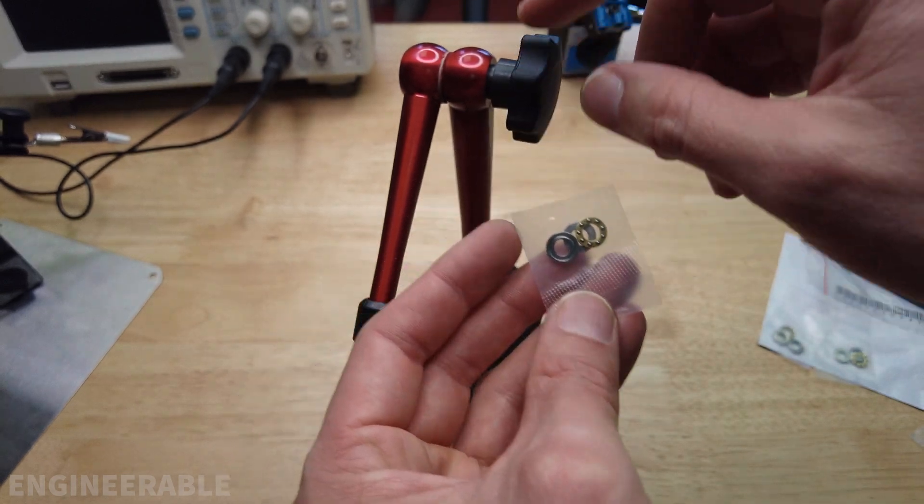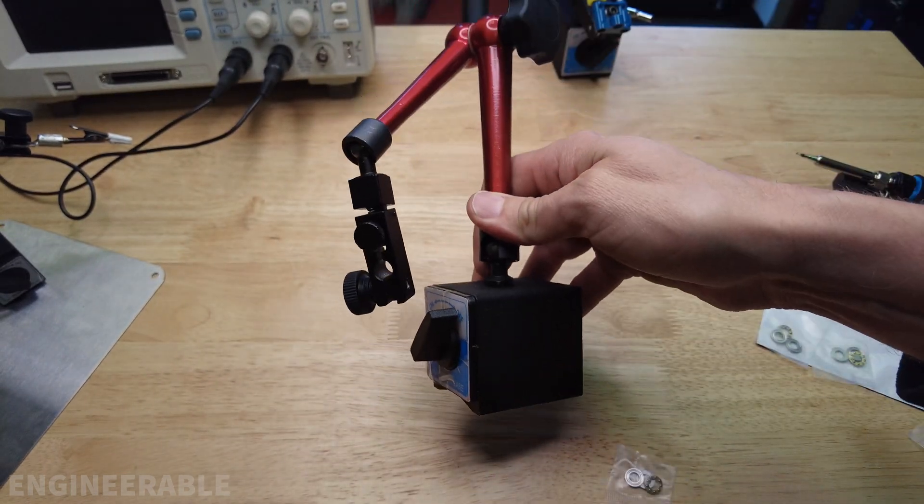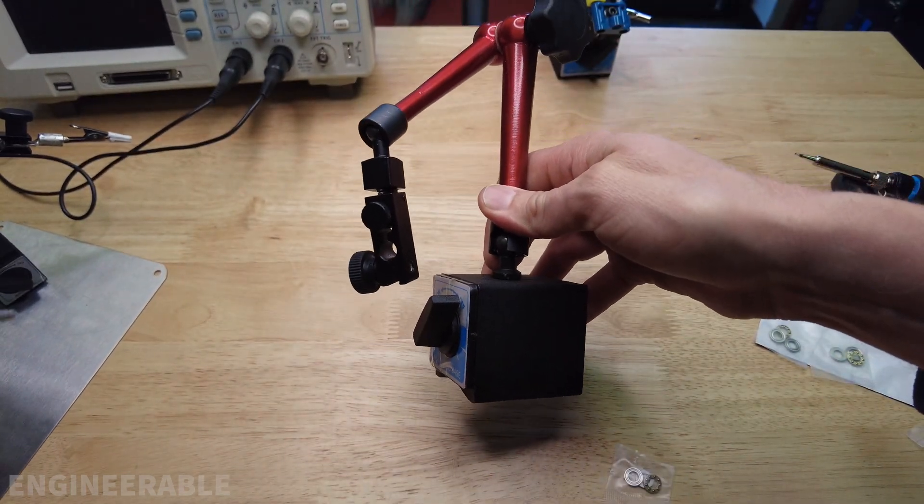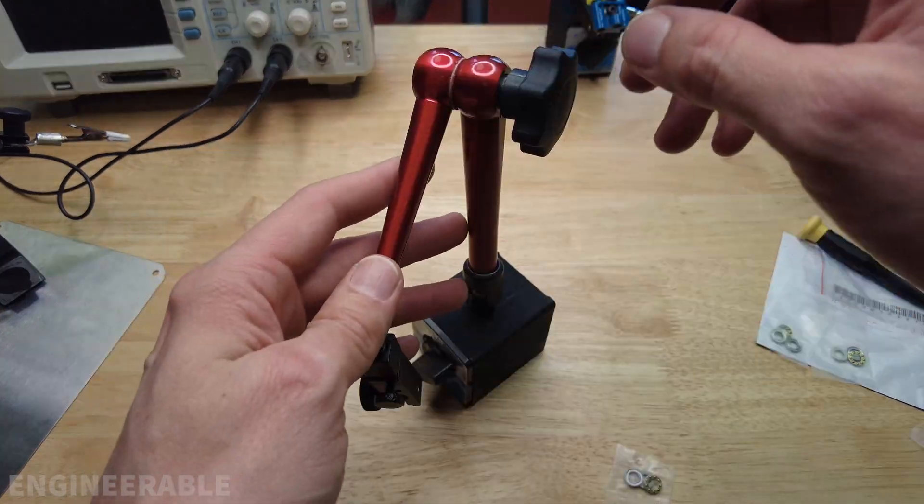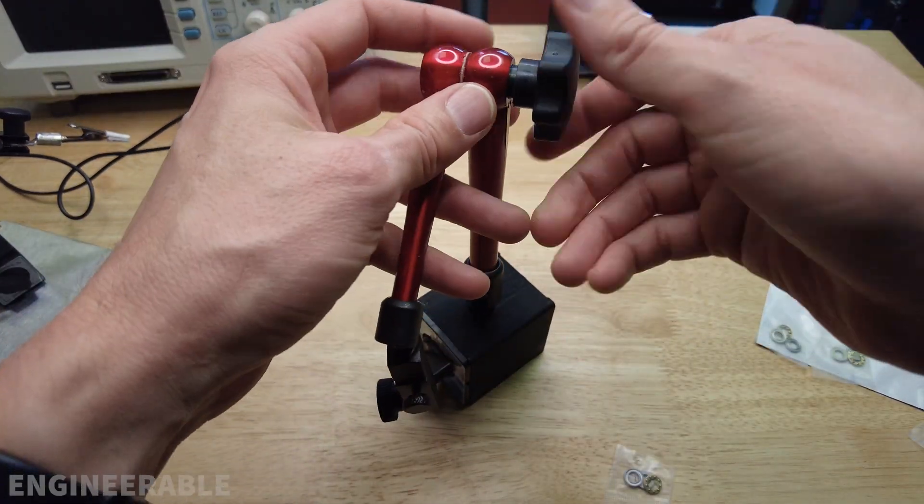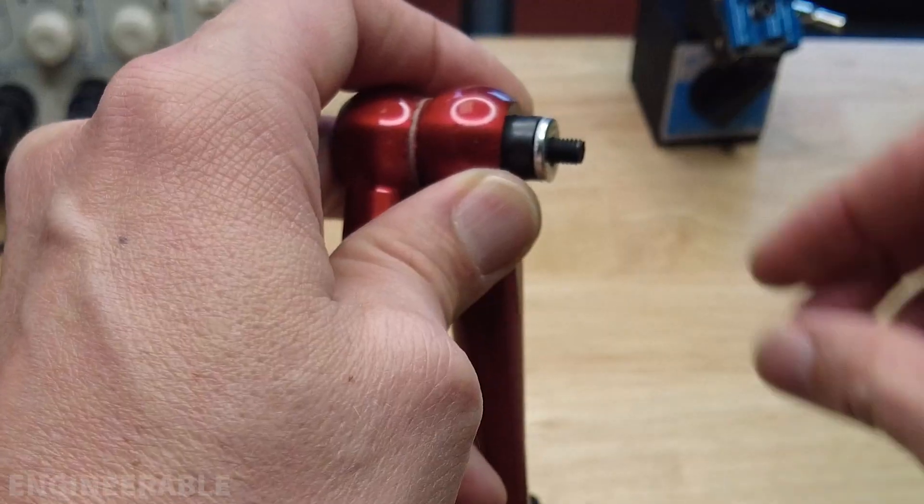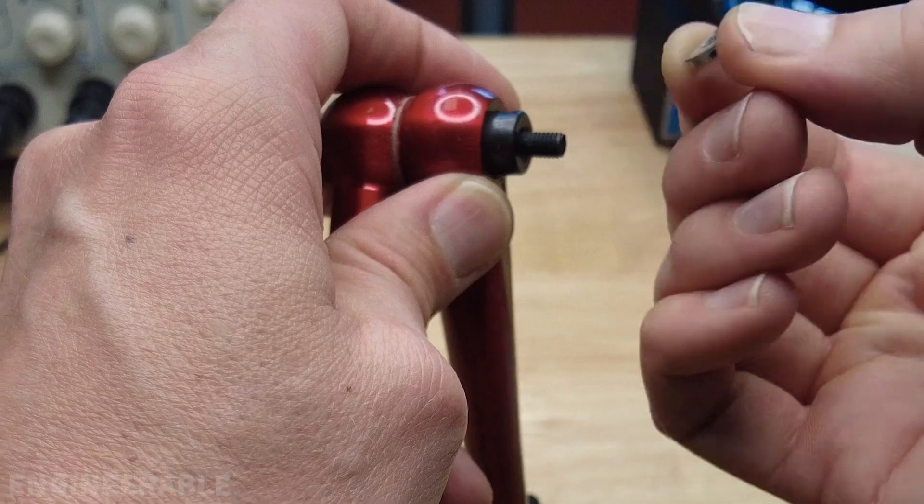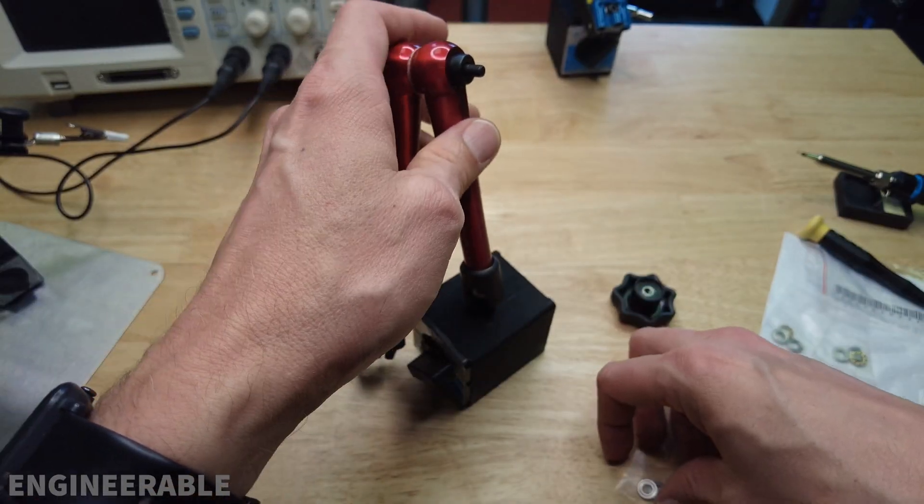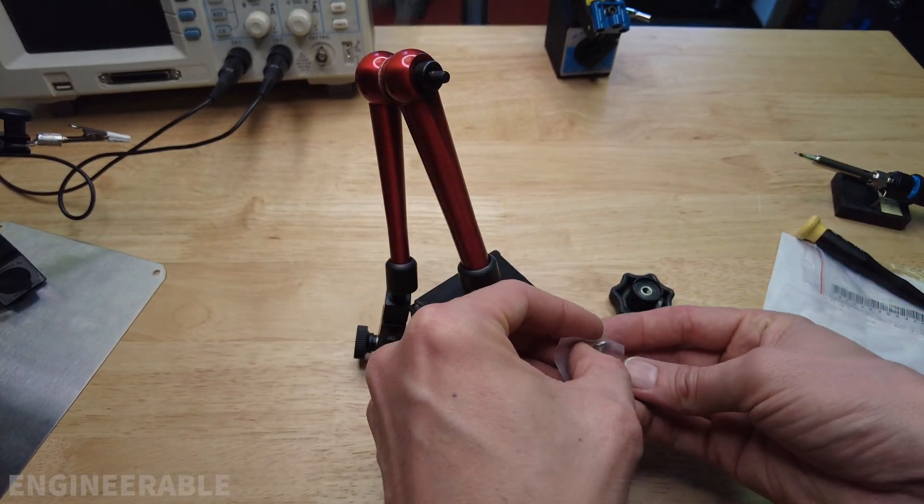The same thrust bearing also works on the larger dial indicator arms that have the large magnet on the base. Here's a large versus the small one. All of the large ones that I've seen come with a plastic knob which makes the ball bearing mod more difficult. They do have a washer in here and this washer is almost as thick as the thrust bearing, so removing that leaves a lot of space for the thrust bearing.